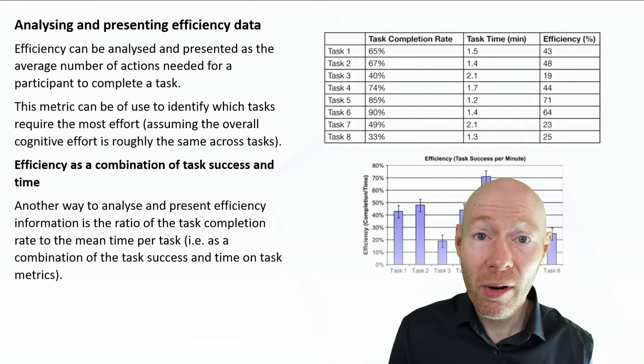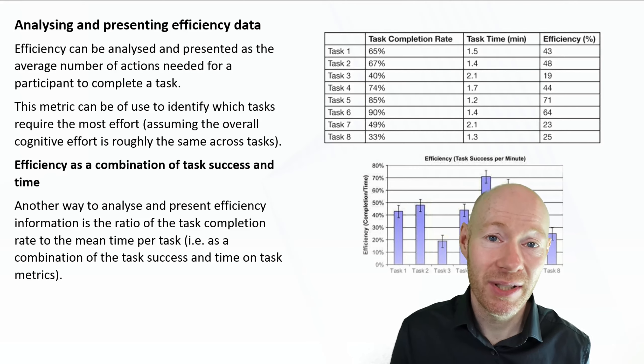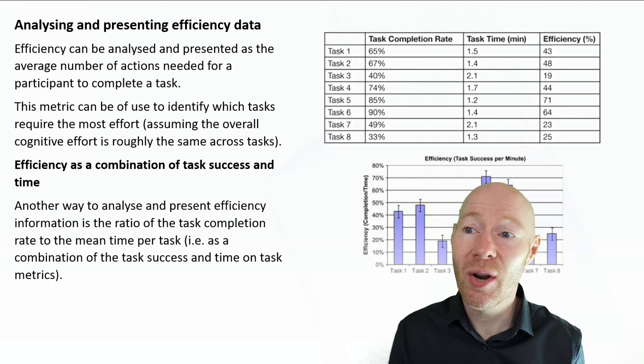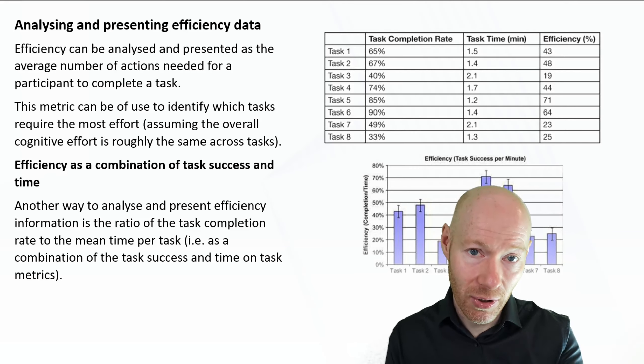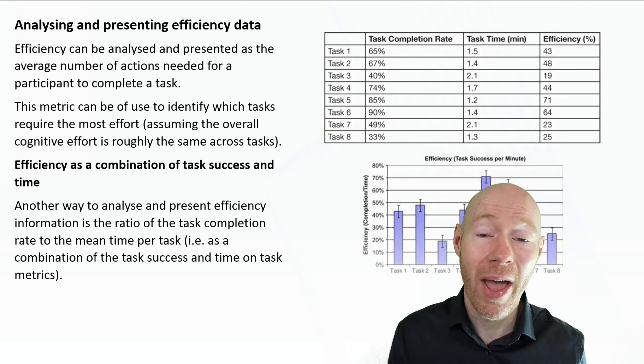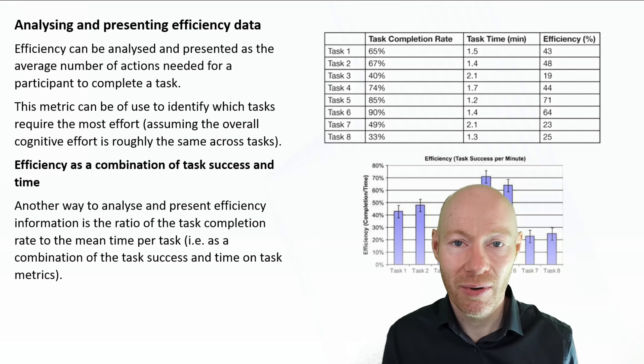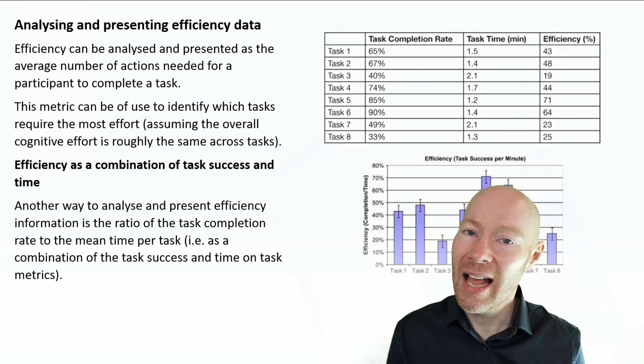When we've done all of that, in terms of presenting it then, typically we present it as the average number of actions for a participant to complete a task. And again, you can view it at a task level looking across our users who do that. You can look at users in terms of the number of actions they take across a range of tasks to work out what sort of variability we see across our users.